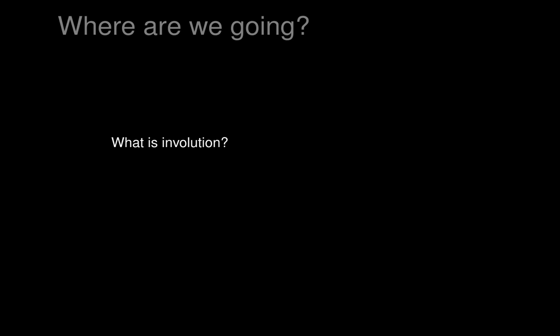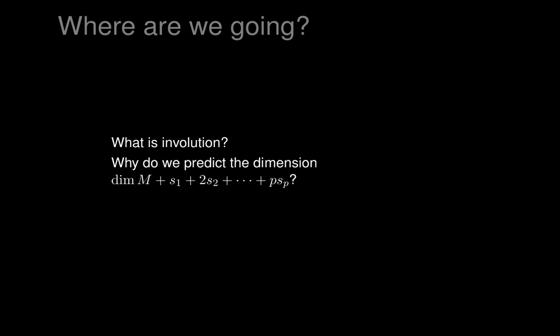We want to understand what involution is. Why is it this strange statement about predicted dimension? What does that have to do with there being some integral manifolds? Specifically, we'd like to come up with this number — this is the predicted dimension — and we'd really like that to pop out naturally from some kind of simple geometric description.